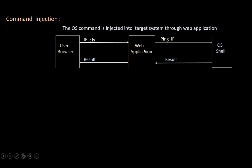This command is sent to the web application, which forwards it to the backend host OS — running ping and then ls. The OS gives the result of the ping command along with the result of ls, which is the list of files, forwarded to the user visible in the browser. So with this, the attacker can execute any command on the backend operating system and get the result on the web page, and can also create a reverse shell to get access into the system.